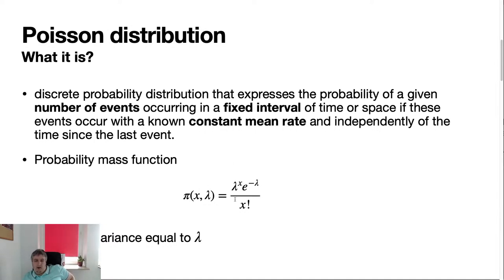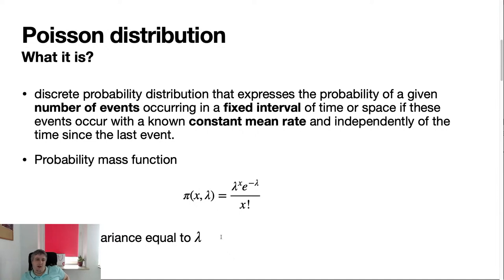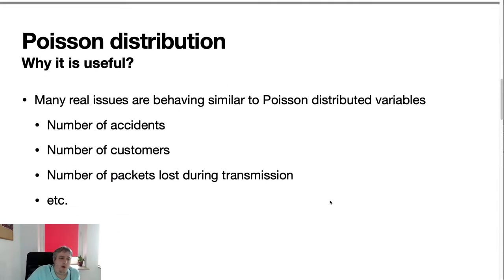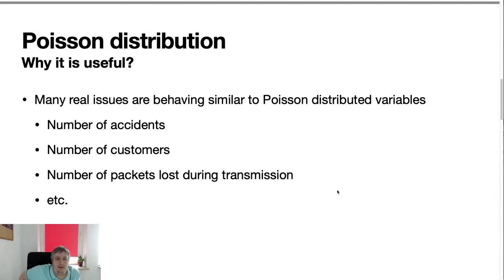Poisson distribution depends on one parameter lambda, which determines both the mean and variance. Lambda can be described by some kind of link function, so it can be a function of other parameters. The entire likelihood corresponding to data consisting of numbers of events is generated by a distribution depending on this one parameter. This is very useful because we often have an unbounded number of events that can occur in a given time and want to model those events and get dependencies on some predictors.